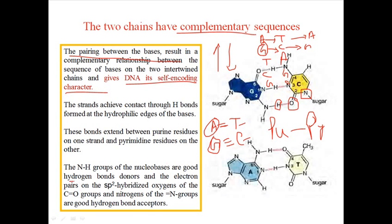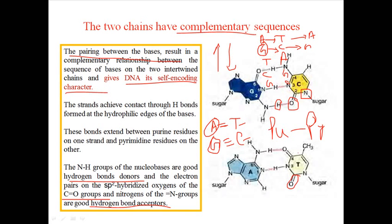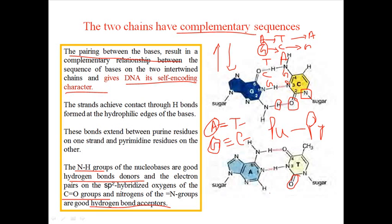Hydrogen bonding always occurs between one purine and one pyrimidine residue. The NH group in a nucleobase can act as a good hydrogen bond donor, and the electron pairs of sp2-hybridized oxygen — that means oxygen from the keto group — acts as a very good hydrogen bond acceptor. In future slides we will designate the NH group as D for donor, the C=O group as A for acceptor, and methyl groups as M.